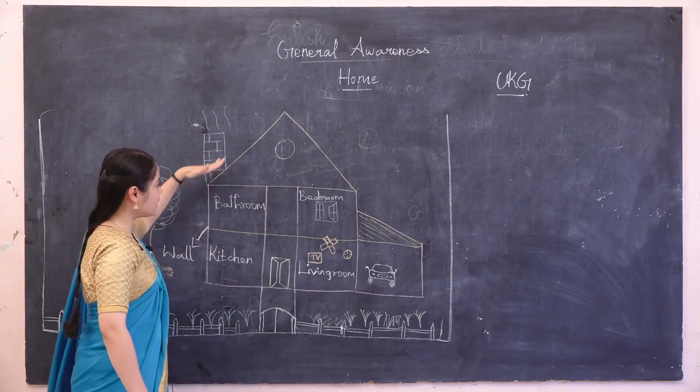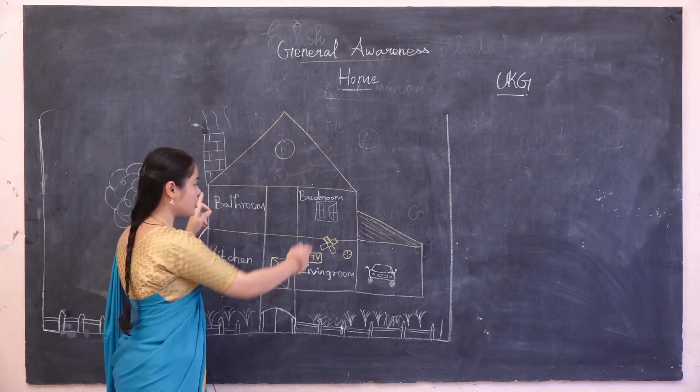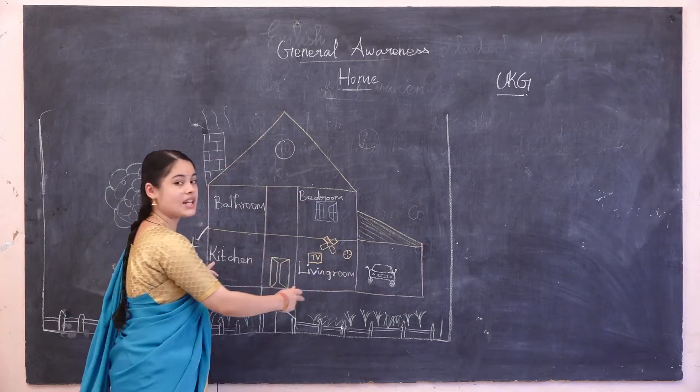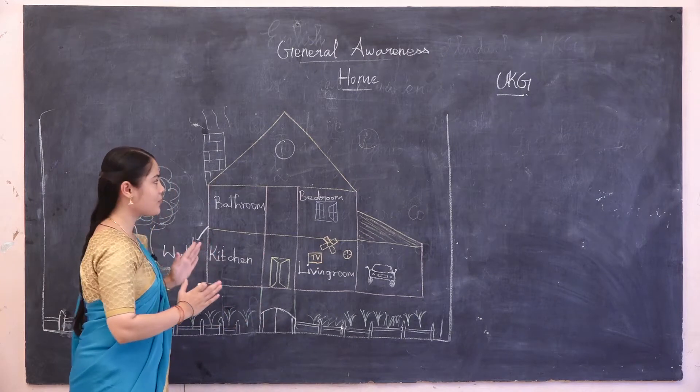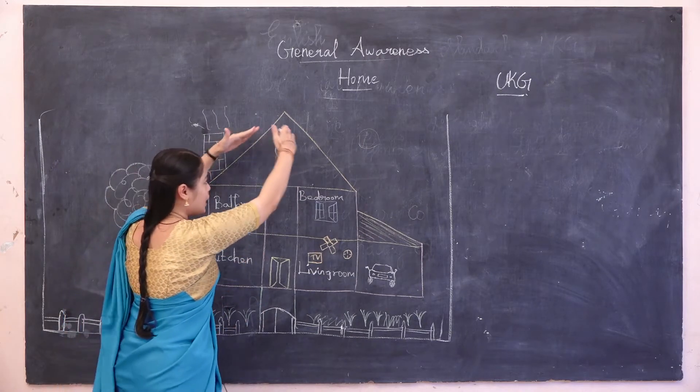The slanting path on the wall is the roof. Roof is the roof.